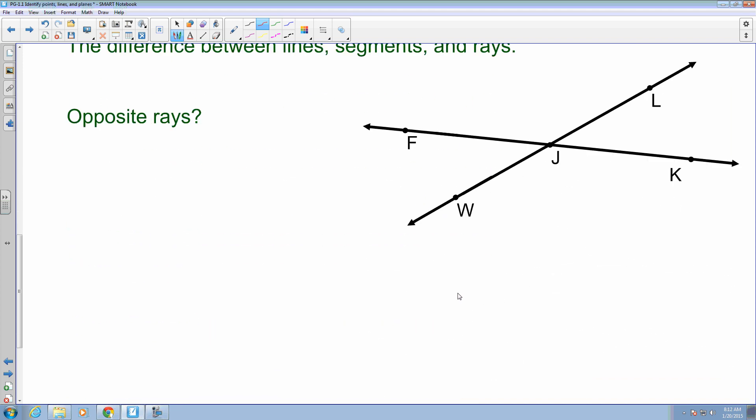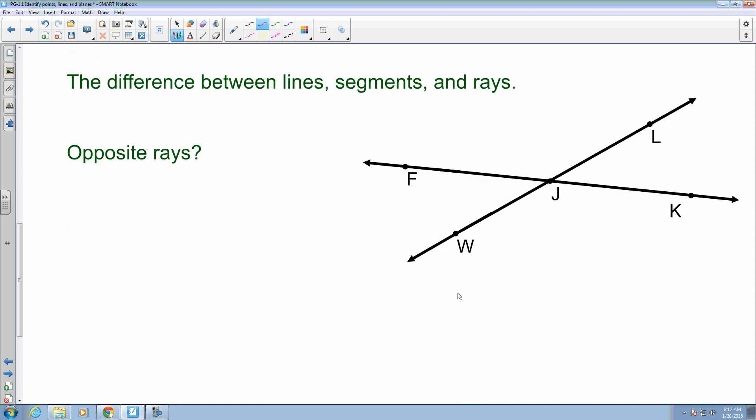So we looked at planes, lines and points. Here are some examples to be able to identify opposite rays and line segments.